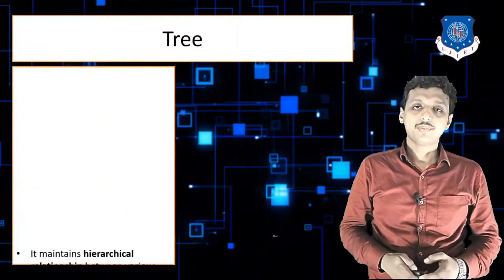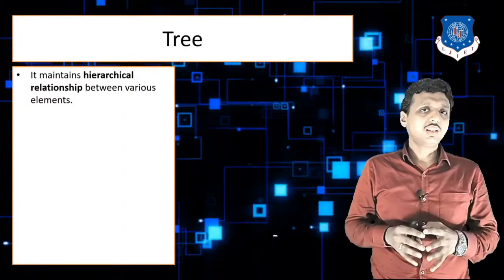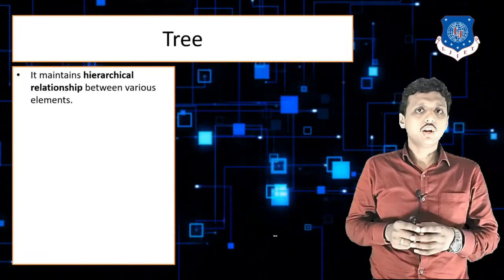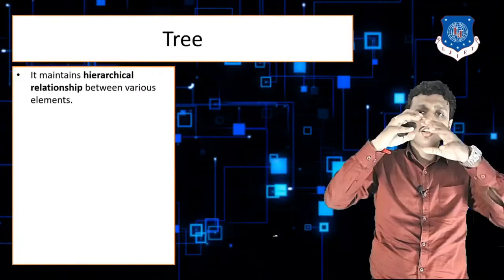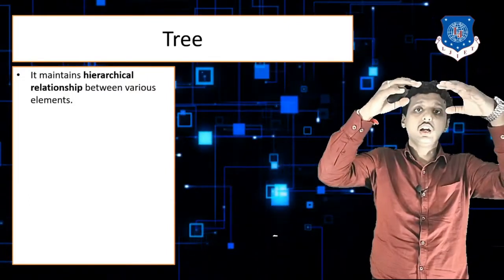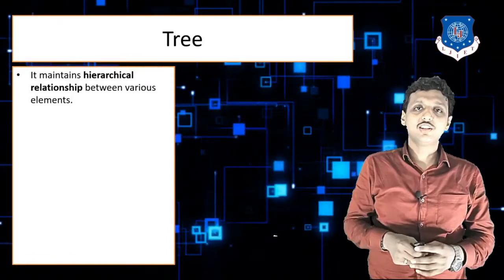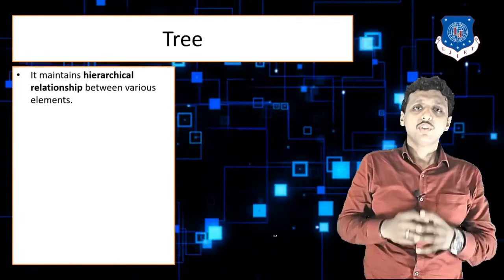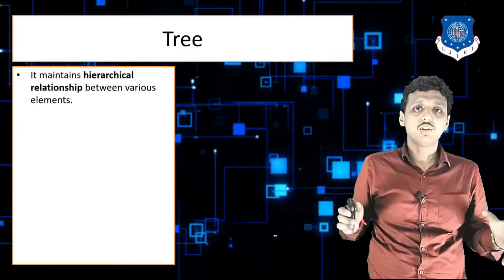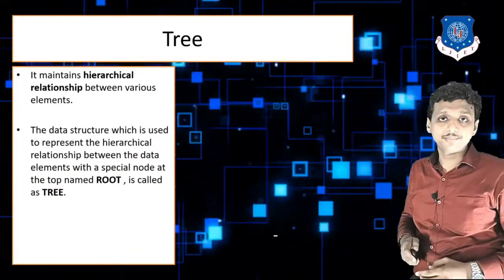Let's start with the tree. Tree shows the hierarchical relationship between elements. Imagine a situation in your college: a director is there, under the director so many faculties are working, and under the faculty so many students are working. This relationship of elements is known as a hierarchical relationship. Such a data structure where elements are stored in a hierarchical fashion is known as a tree.